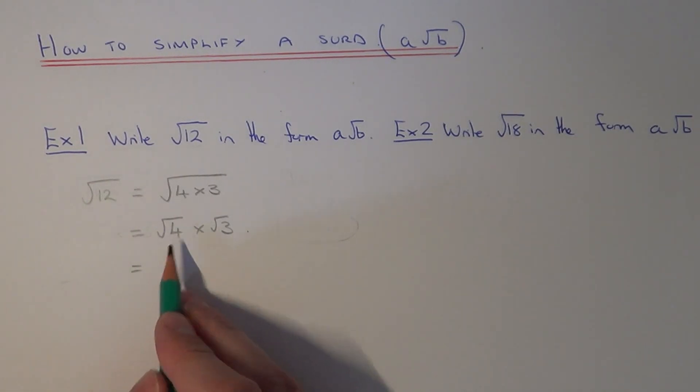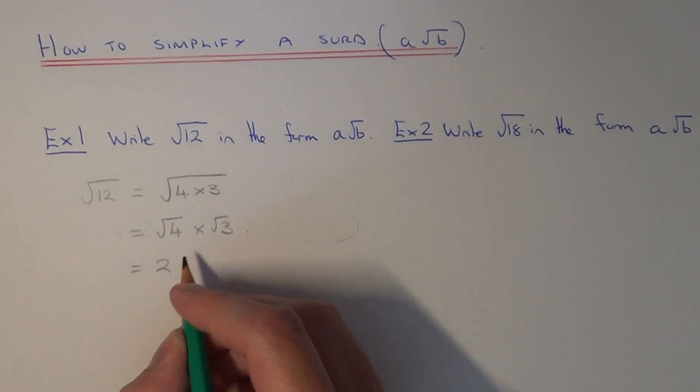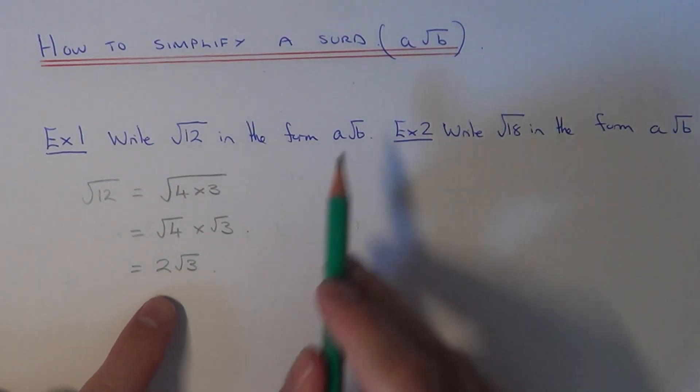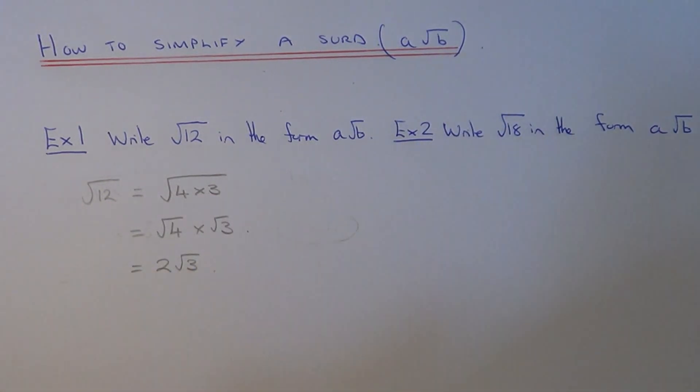So the square root of four is two, and we just put the root three at the end; we can't do anything with that. So we've written it in the form A root B where A is two and B is three.